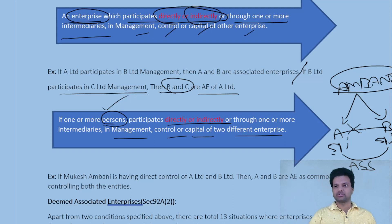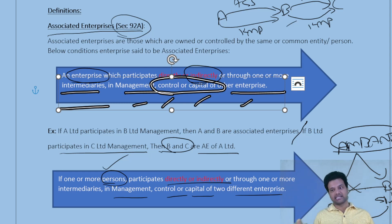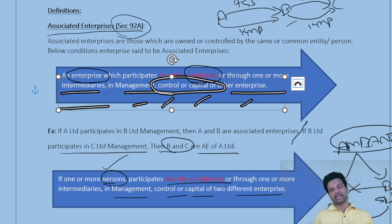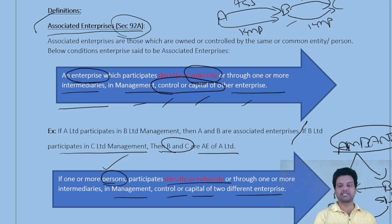In summary, associated enterprises means enterprises which participate either directly, indirectly, or through intermediaries in the management, control, and capital of other enterprises — that is point one. Point B: if a person, directly or through one or more intermediaries, participates in the management, control, and capital of common enterprises, those enterprises are also associated enterprises. This is the definition under Section 92A.